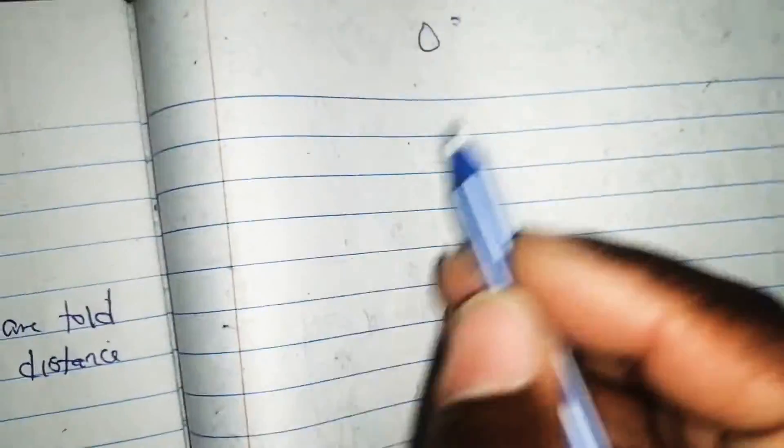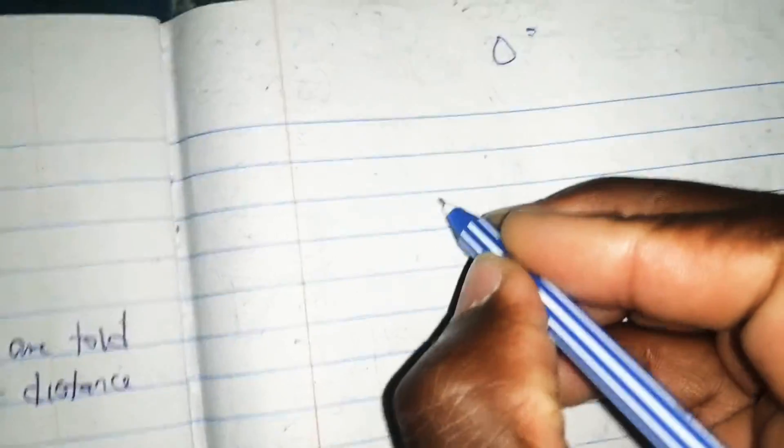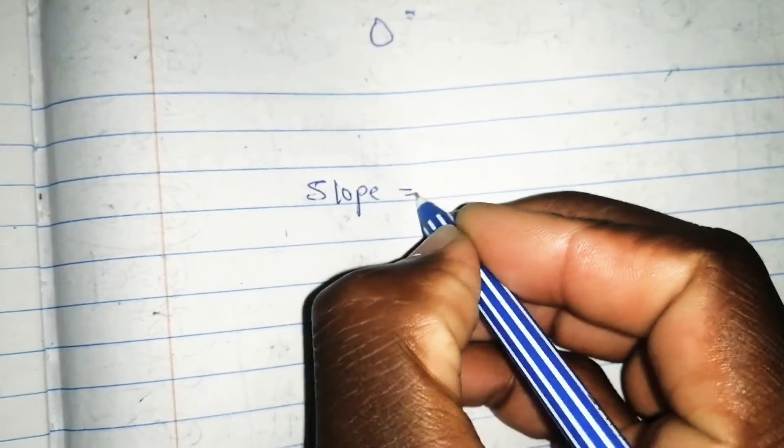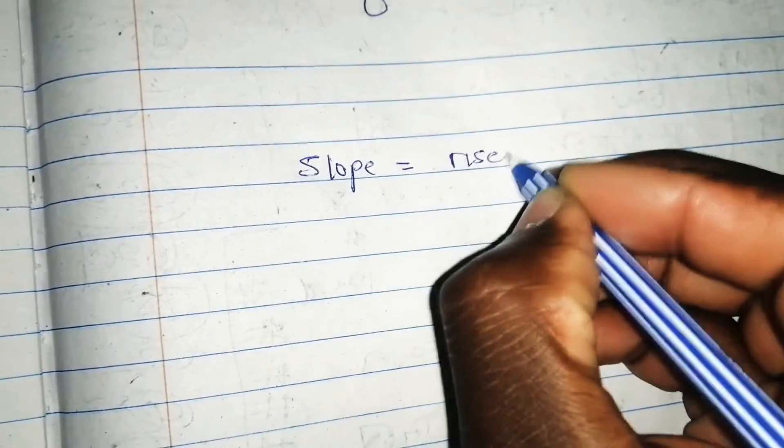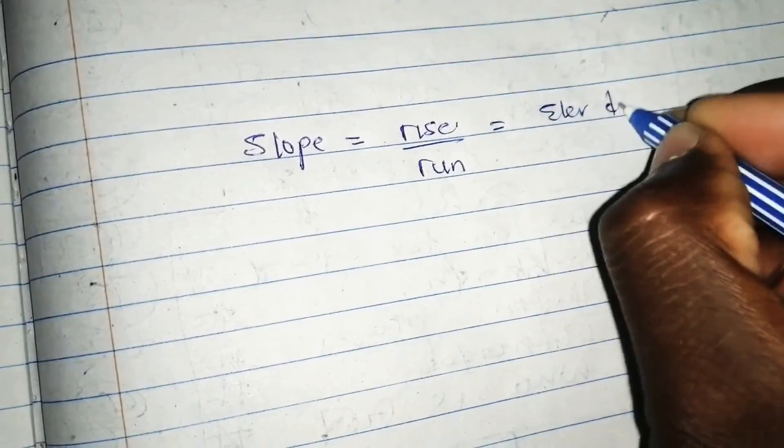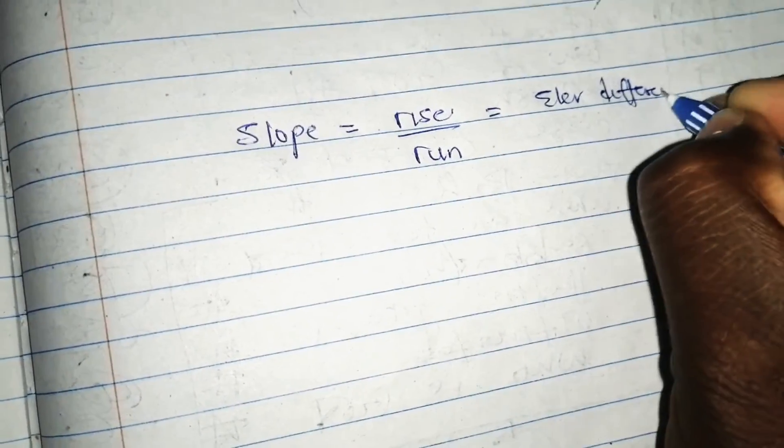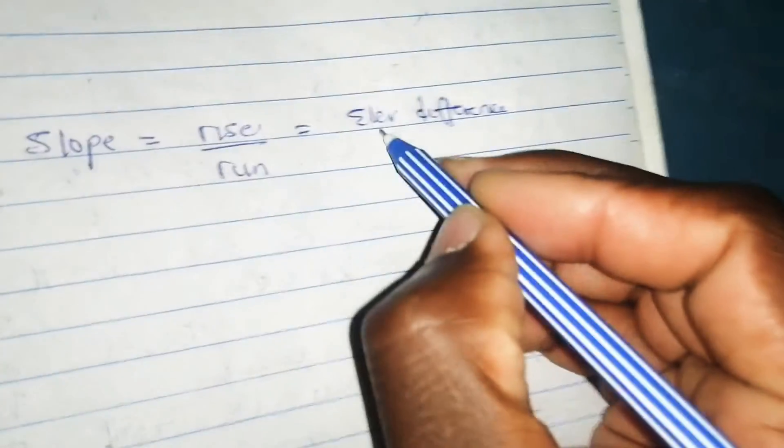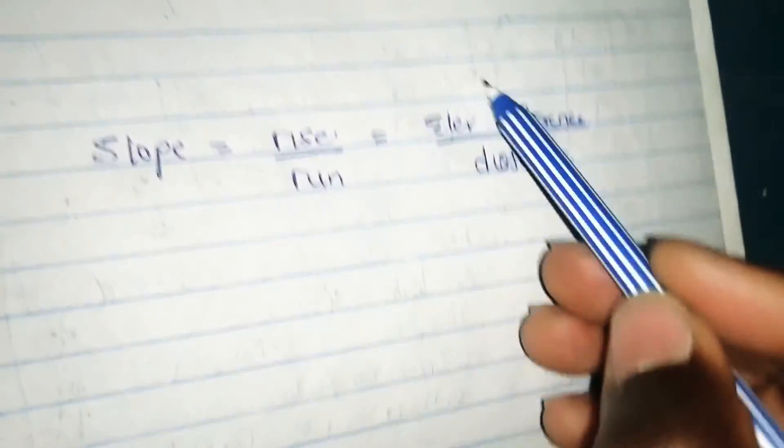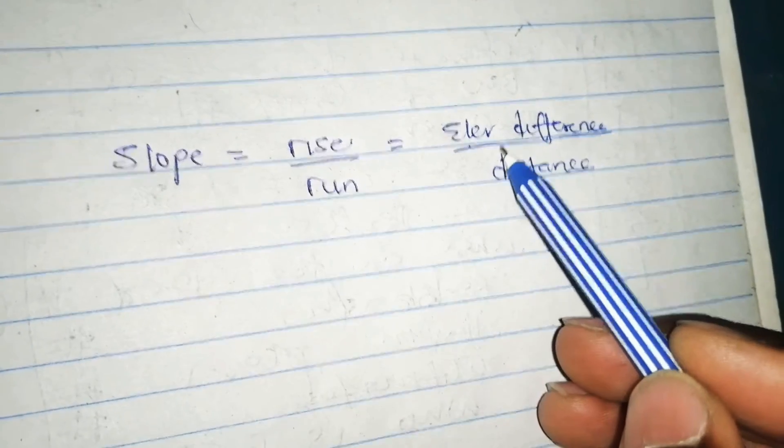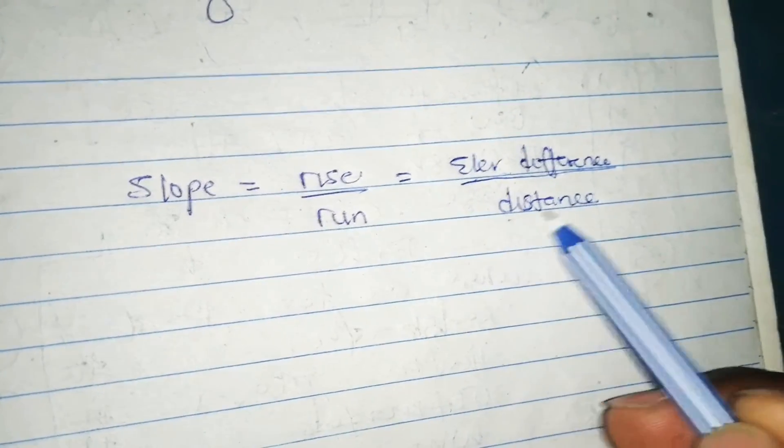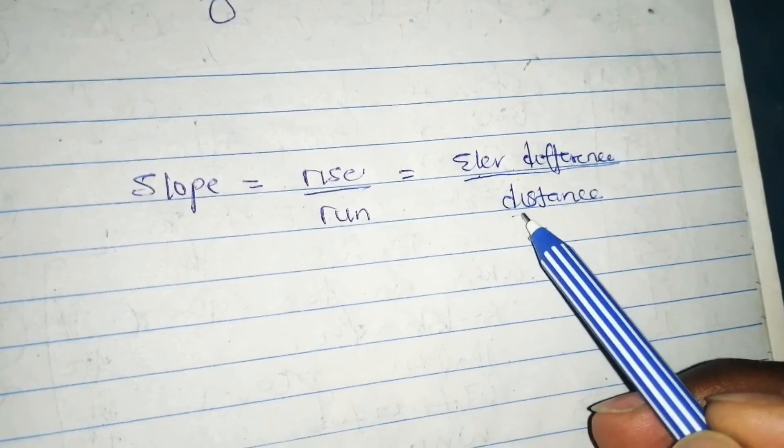First of all, we need to understand that slope equals rise over run, or we can say elevation difference over distance. What this means is that you have two points on different elevations. You need to subtract those two points and find that difference. Then the distance is just the distance between the two points.